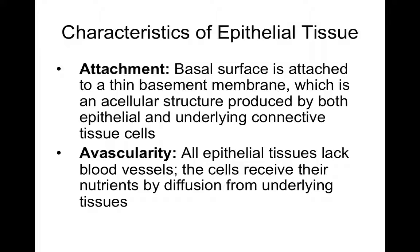Epithelial tissues are avascular — they don't have blood vessels. If you cut an epithelium, it would not bleed. If a cut is bleeding, you've gone through the epithelial tissue into the underlying connective tissue and ruptured a blood vessel there. All epithelial tissues get their nutrients from the underlying connective tissue. Nutrients from blood vessels in the connective tissue diffuse up through the basement membrane to nourish the epithelial cells.